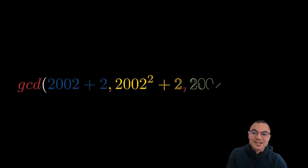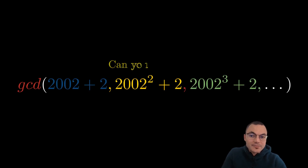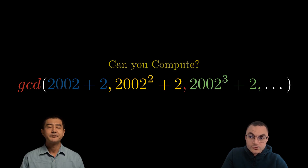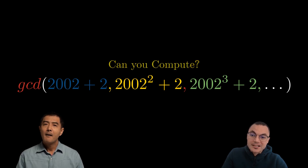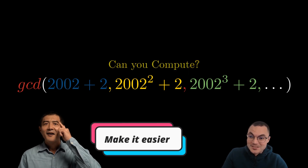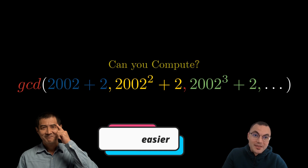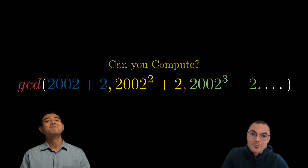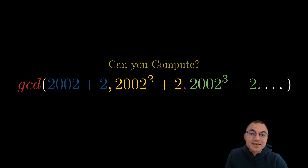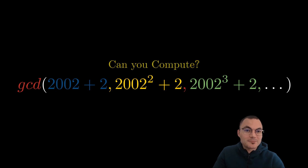Hello guys, this is Aladdin and today we are tackling the greatest common divisor of an infinite sequence: 2002 plus 2, 2002 squared plus 2, 2002 to the power of 3 plus 2, and so on. But don't stress — we've got the 'make it easier' strategy, which is like having a cheat code for math. If you did not see my video about the make it easier strategy, you will find the link down below in the description. Please take some time to think about the problem on your own. Let's now jump into it.